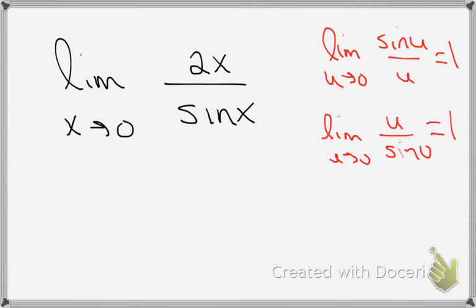So even if it's inverted, it still has that same property. So looking at this problem we have here now, we see that we have the argument of sine is just x, but in the numerator, we have a 2x.